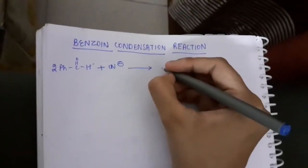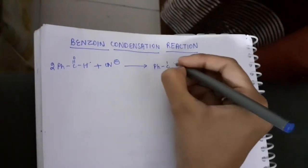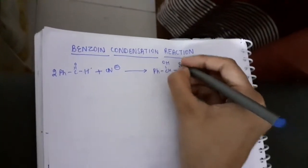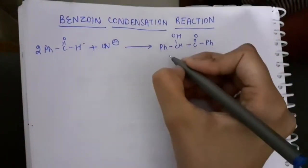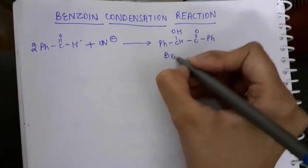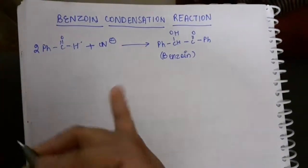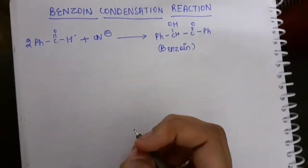Both react together to form a compound known as benzoin. How does benzoin look like? This is the compound which is known as benzoin. We'll be studying how we use benzaldehyde to form a benzoin compound.